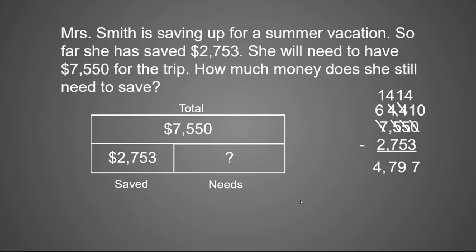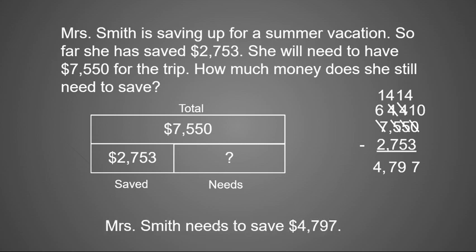So my total would be $4,797. That tells me that Mrs. Smith still needs to save $4,797, and it answers our question: how much money does she still need to save? That was an example of how you can solve a subtraction problem using a bar model.